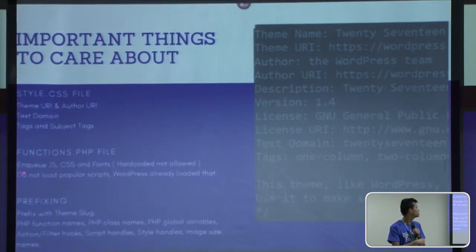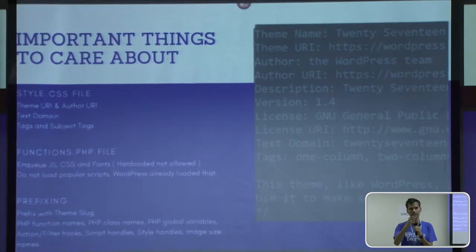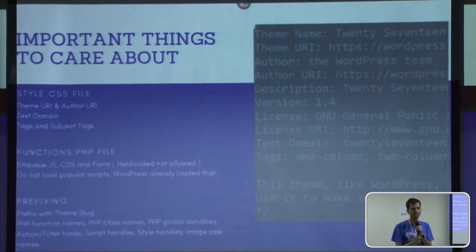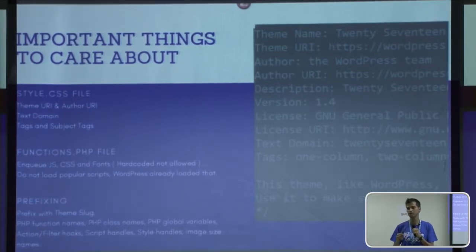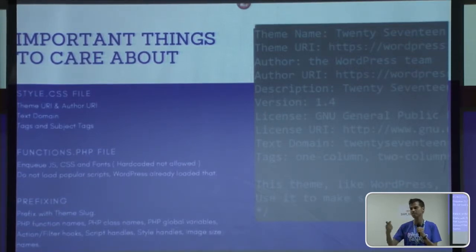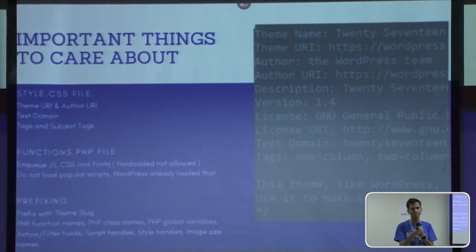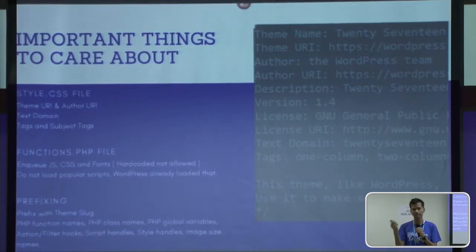In the functions.php file, you need to enqueue JS properly. Hard-coded JS is not allowed. While developing HTML templates you use JS and CSS hard-coded, but likewise you are not allowed to do that in a WordPress theme. For example, enqueuing wp-enqueue jQuery is not allowed, because most popular JavaScript libraries are loaded by WordPress itself. You don't need to enqueue jQuery or masonry.js because they are already loaded in WordPress.